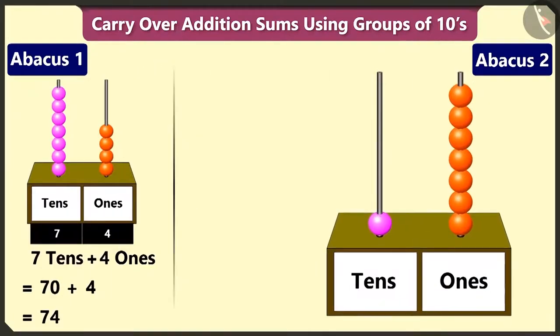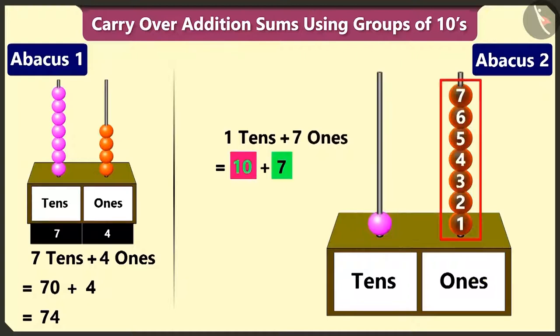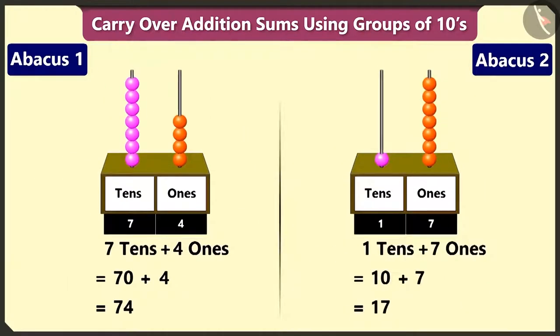And in the second abacus, in the tens box, there is 1 bead. This makes it 1 tens. In the ones box, there are 7 beads, that is 7 ones. So, adding 1 tens and 7 makes 17. Now, we have to add 74 and 17.